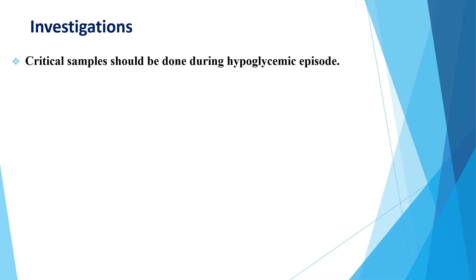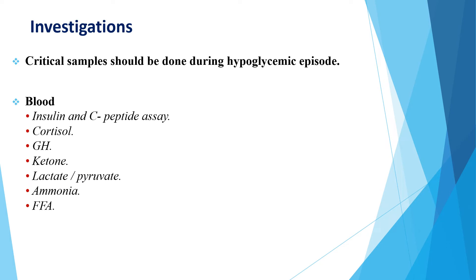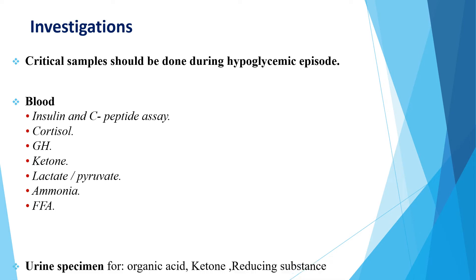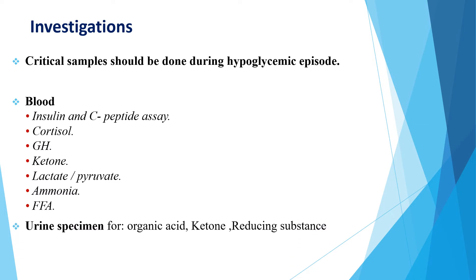Regarding investigations, laboratory investigations for diagnosing the cause of hypoglycemia should be done during hypoglycemic episodes. From blood, we draw insulin and C-peptide assay — C-peptide is elevated if hyperinsulinism is endogenous, whereas C-peptide is low or normal if it is from an external source. We also draw cortisol, growth hormone, ketones, lactate, pyruvate, and ammonia. From urine, we send for organic acids, ketones, and reducing substances.